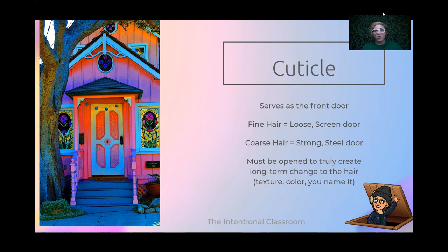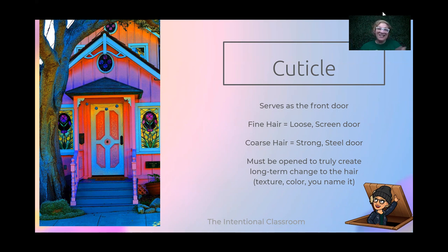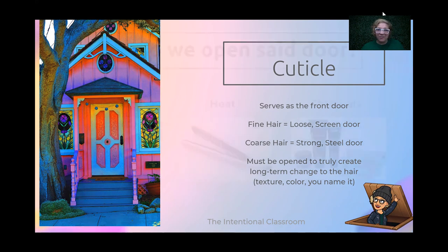Anytime we do texture — so perming or relaxing — or anytime we color it and it's going to be long-term, we have to get through that cuticle layer first. The cuticle is also where we damage the hair. Sometimes we even burn it off to the point that there is no door at all — just an open hole into the house. The cuticle layer is also the layer we're often affecting with conditioners. How you treat it is really going to determine the integrity of your hair long-term.